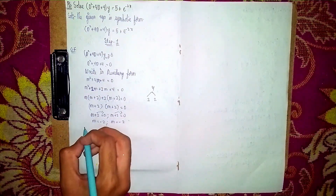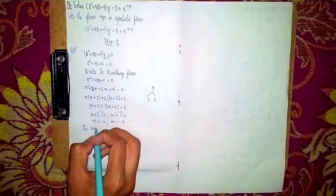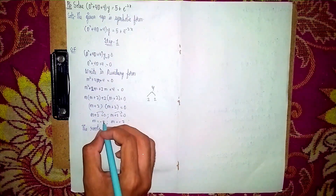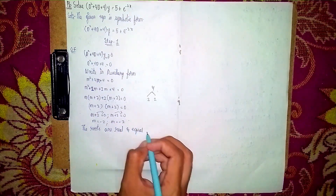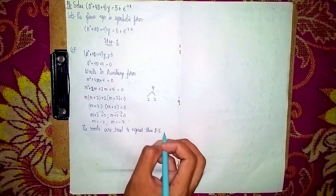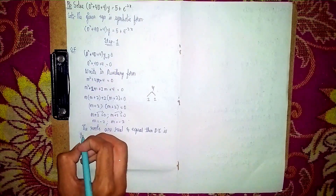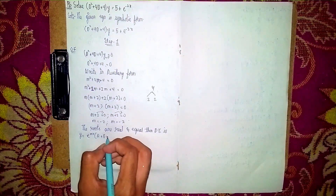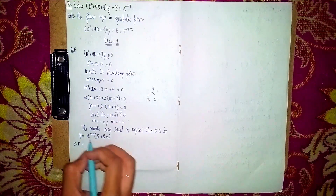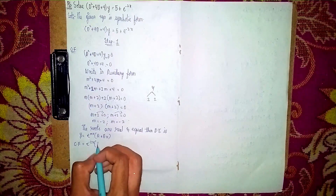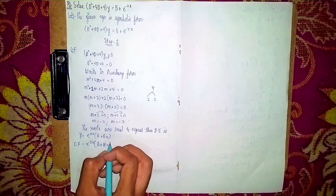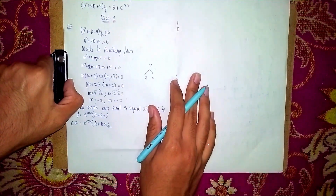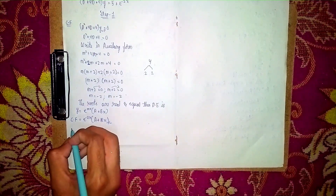The roots are real and equal: m = −2 and m = −2. For this case, the complementary function formula is y = e^(mx)(a + bx). So our complementary function is: CF = e^(−2x)(a + bx). This completes Step 1.